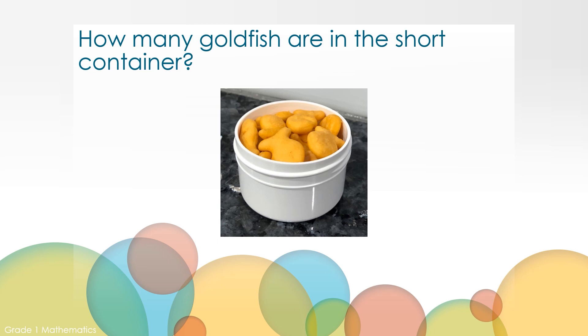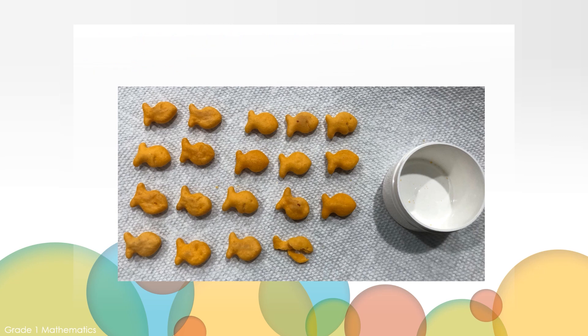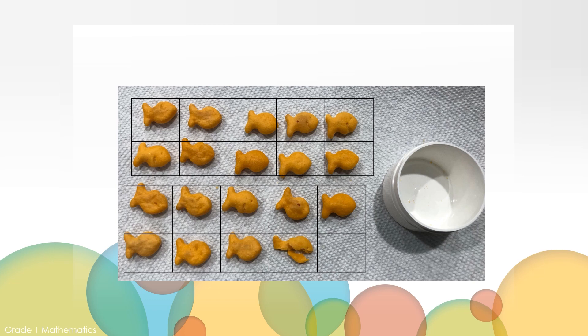Make a prediction. How many goldfish are in the short container? Let's count to find out. I've made some ten frames that are going to be put on top of the fishies to help us count. Ten. Here is the second ten frame. It doesn't fill the whole ten frame. There's one empty space. The short container holds 19 goldfish. I put the cracker crumbs together to make the 19th goldfish.